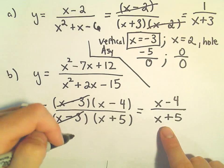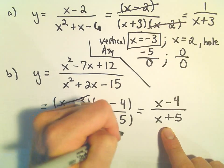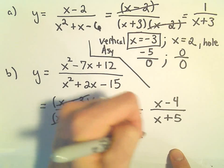So in this case, if we set the denominator equal to zero, well, that would just tell us that x equals negative 5.